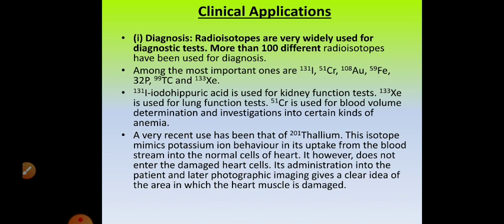Iodine-131-labeled iodohippuric acid is used for kidney function tests. Xenon-133 is used for lung function tests. Chromium-51 is used for blood volume determination and investigation into certain kinds of anemia. Radioisotopes are thus used for diagnosis of various diseases and organ analysis.